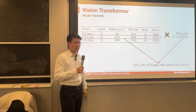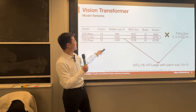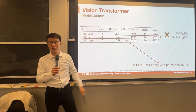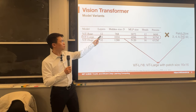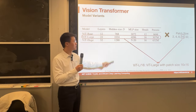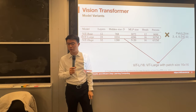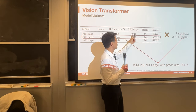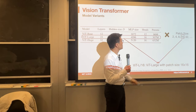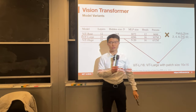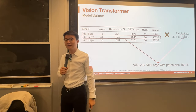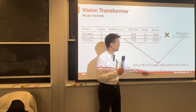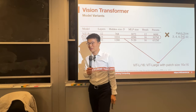There are different ViT variants: ViT-Base, ViT-Large, and ViT-Huge, ranging from 12 to 32 layers, hidden dimensions from 768 to 1280, and MLP sizes from 3,000 to 5,000. These models have hundreds of millions of parameters. In contrast, ResNet-50 has about 25 million parameters, so ViT is roughly 10 times larger.